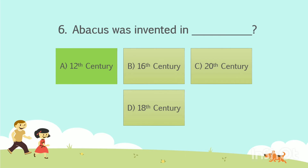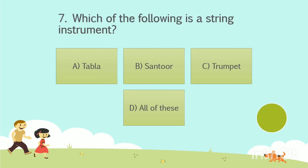Let's go to the next question. Which of the following is a string instrument? Option A: Tabla. Option B: Santur. Option C: Trumpet. Option D: All of these. Your time starts now. The answer is Option B: Santur.